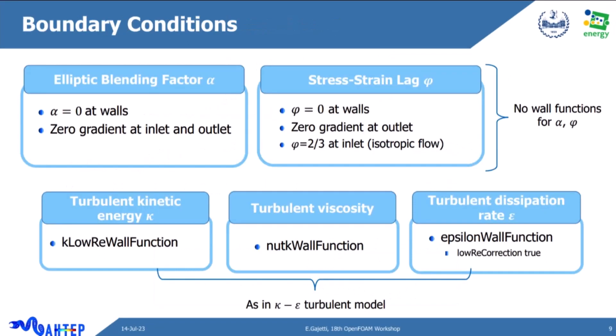Regarding boundary conditions: both Alpha and Phi do not require wall functions, so boundary conditions are simple — zero is imposed at walls for both variables, and zero gradient at the outlet. At the inlet, zero gradient can be imposed for the elliptic blending factor Alpha, and for Phi a good choice is two-thirds, which is the value of Phi in isotropic flow and follows from its definition. For turbulent kinetic energy, turbulent dissipation rate, and turbulent viscosity, the same boundary conditions as for a standard K-Epsilon model in OpenFOAM can be used.